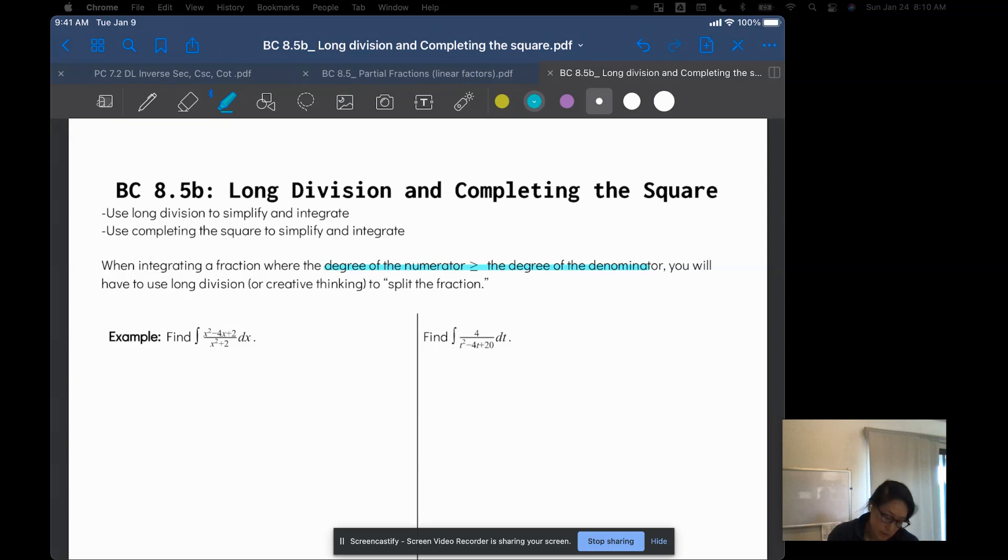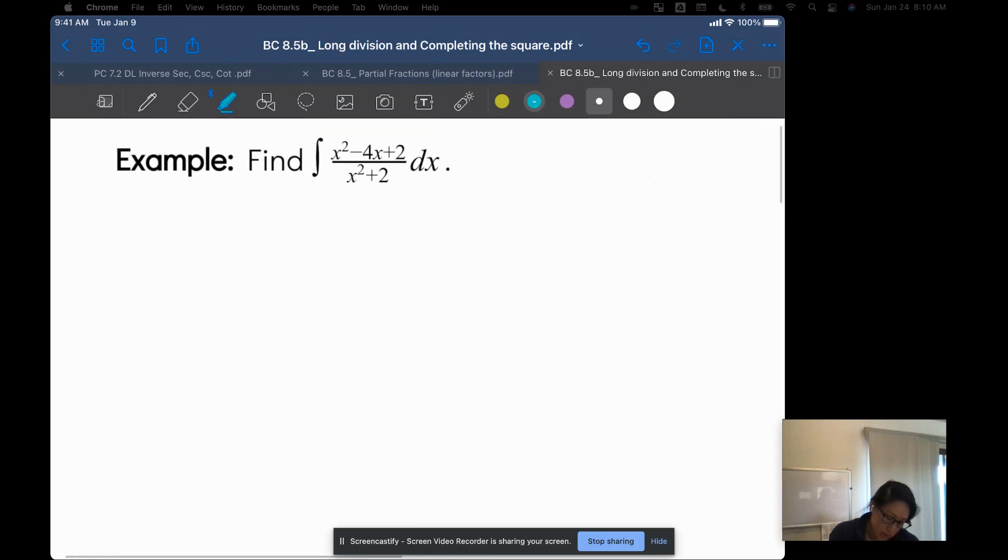Let's just do a couple examples, and I'll also remind you how to do long division. So we put the numerator inside and the denominator outside when we divide, so x plus 2 divided by x squared minus 4x plus 2. We notice that the degree of the numerator is equal to the degree of the denominator, so this is a good opportunity for us to use long division.